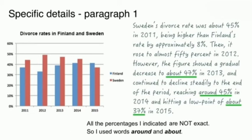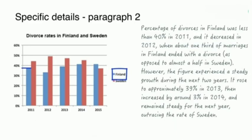You can see I have underlined wherever I described percentages — 45%, 47%, 37% — and used 'about', 'around', or 'approximately'. This makes it clear that these are approximate figures. Whenever you cannot determine the exact figure, use 'about', 'around', or 'approximately', and your bands will improve. Many students get stuck at 5.5 in writing for this very reason.